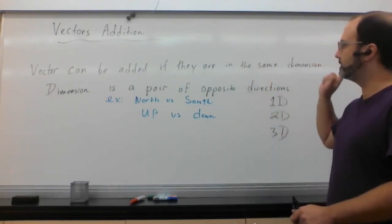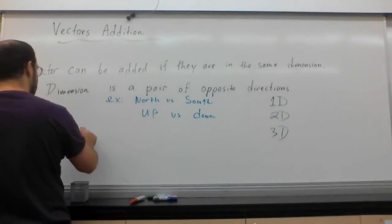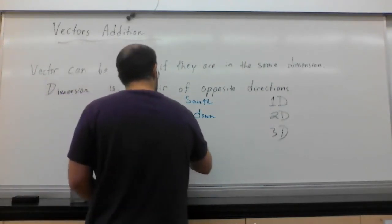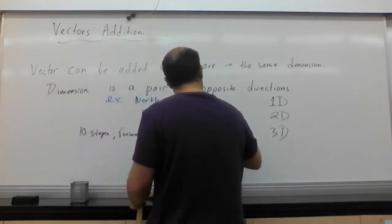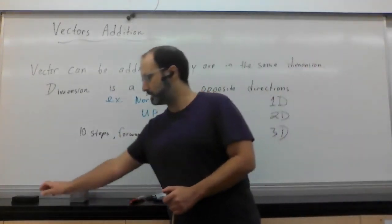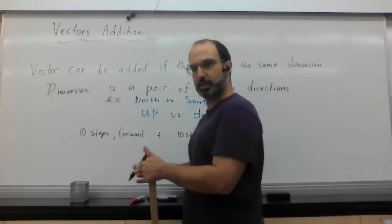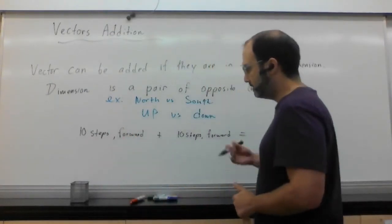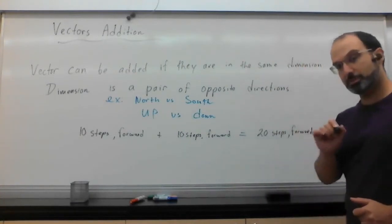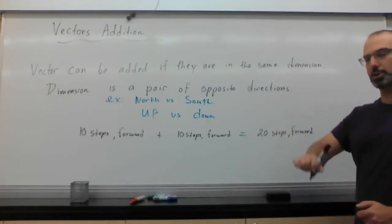We can add vectors if they are in the same dimension. If something is 10 steps forward, and then another 10 steps forward, I can add those two and get my final result — that's straightforward. This would clearly be 20 steps forward. Notice: 20 steps is the magnitude, and forward is the direction.